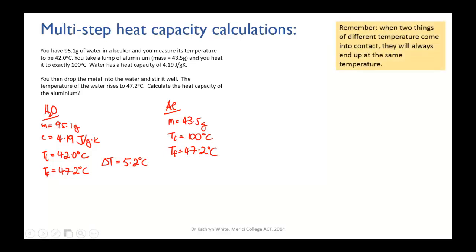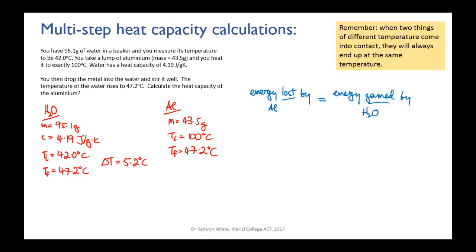It's worth remembering that when two things at different temperatures come into contact, the hot one cools down and the cold one warms up until they're both at exactly the same temperature. So when you put the hot metal into the cool water, they both end up at 47.2 degrees Celsius. The energy lost by the aluminium equals the energy gained by the water, assuming no heat is lost.